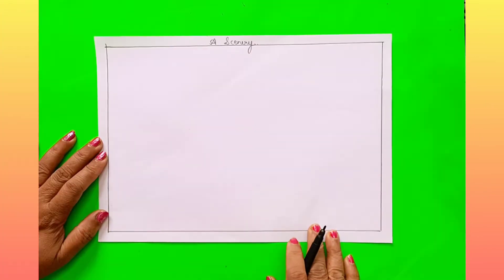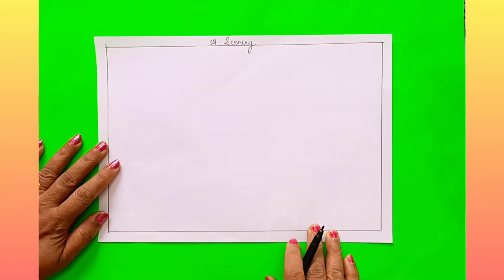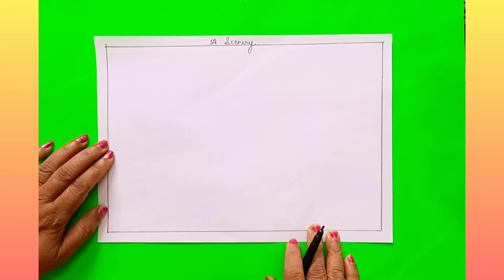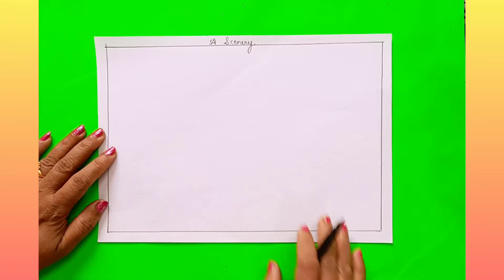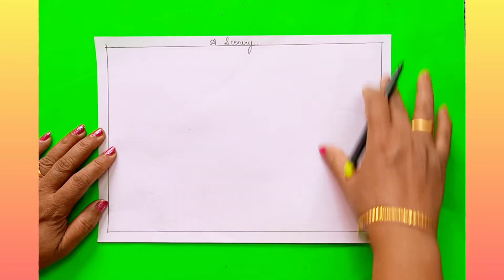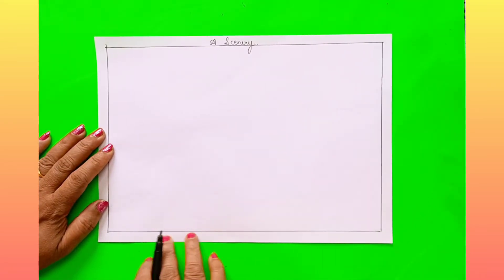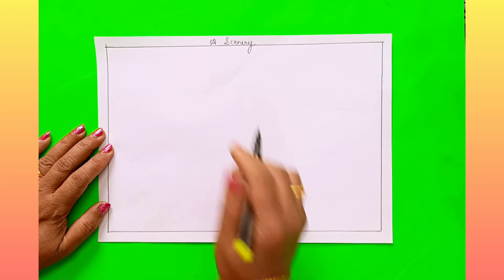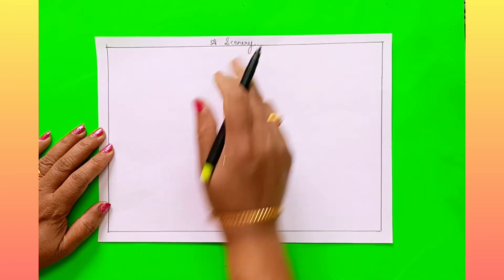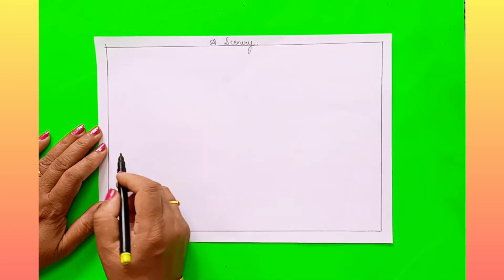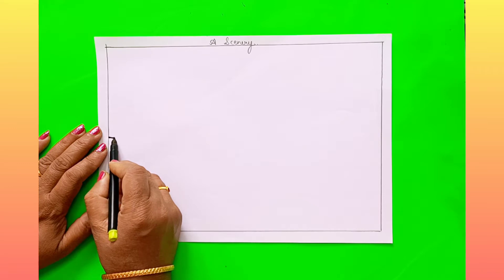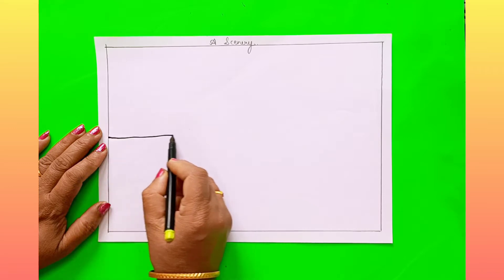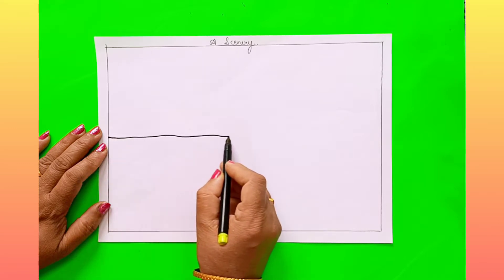Good morning children. Today I will show you how to draw a scenery. For this you have to keep a paper in a horizontal way. Write a title first. You have to start from here and draw one center line.